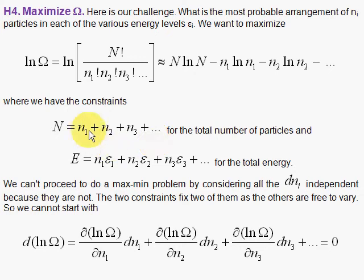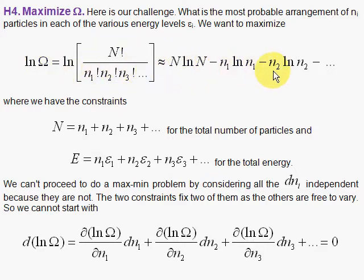Dr. Fisch, Theoretical Physics, maximizing the number of ways particles can be distributed in various energy levels. And by maximizing omega, I will maximize log of omega, since it will be easier. And when I write this out in terms of the logs and using Stirling's approximation, I get this form that we derived in an earlier section.